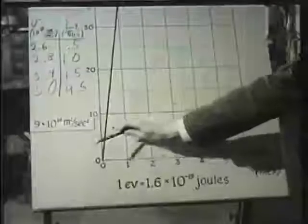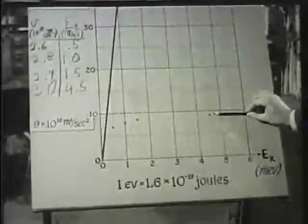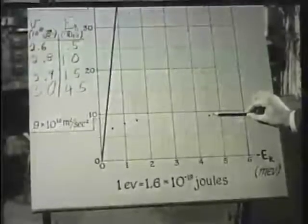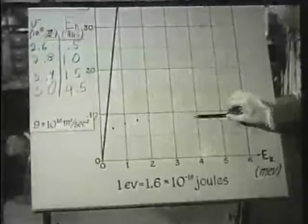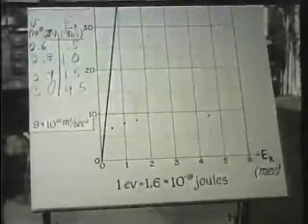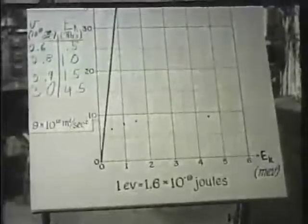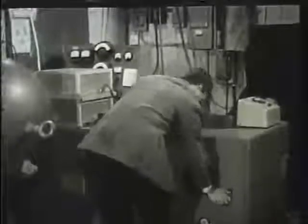From the way this graph levels off, it looks as though there might be a limit to the speed that an electron can have, no matter how much we increase the energy. And from what we can see here, this limit might well be the speed of light, the square of which is 9 times 10 to the 16th meters squared per second squared. The way the speed levels off in our graph is contrary to our intuitive idea that if we push harder on electrons, they should move faster. We had better carefully check our experiment.